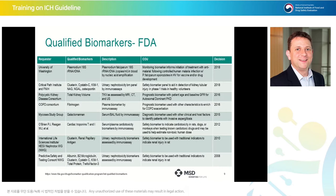O'Brien et al., in 2012, qualified cardiac troponins T and I in the serum and plasma as biomarkers by immunoassay. The context of use here was as a safety biomarker to indicate cardiotoxicity in rats, dogs, or monkeys when testing known cardiac toxic drugs to estimate non-toxic human dose.